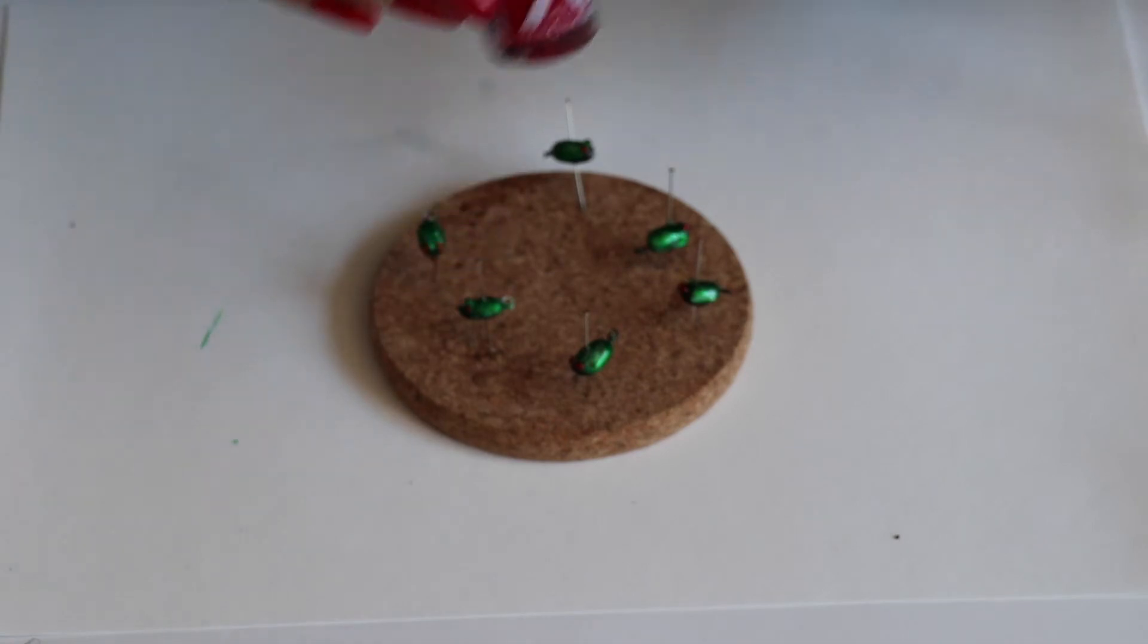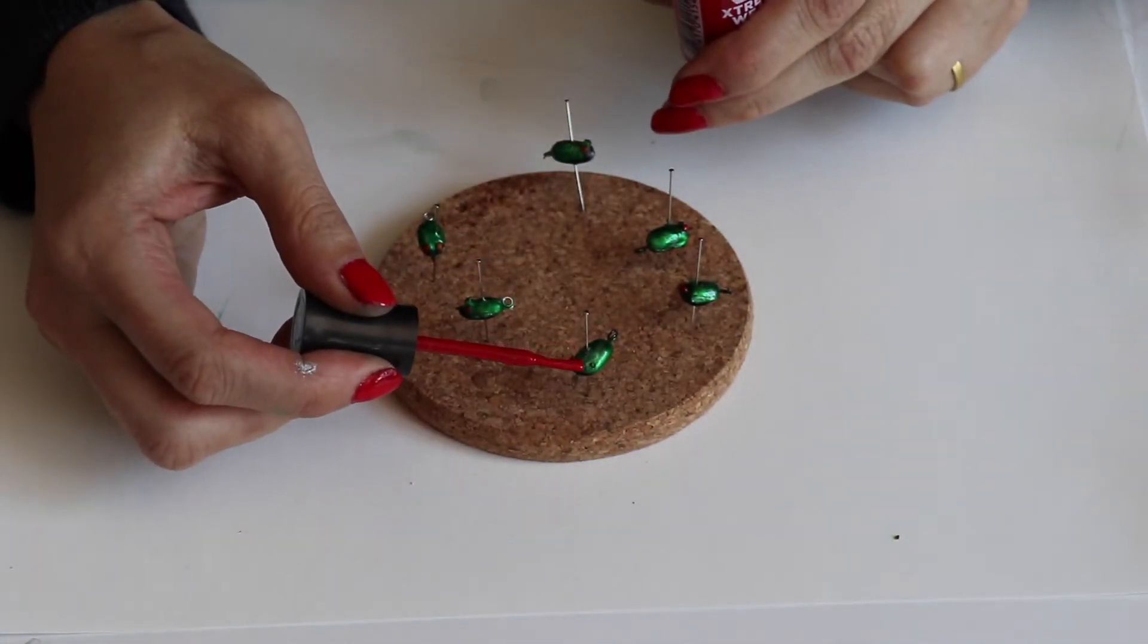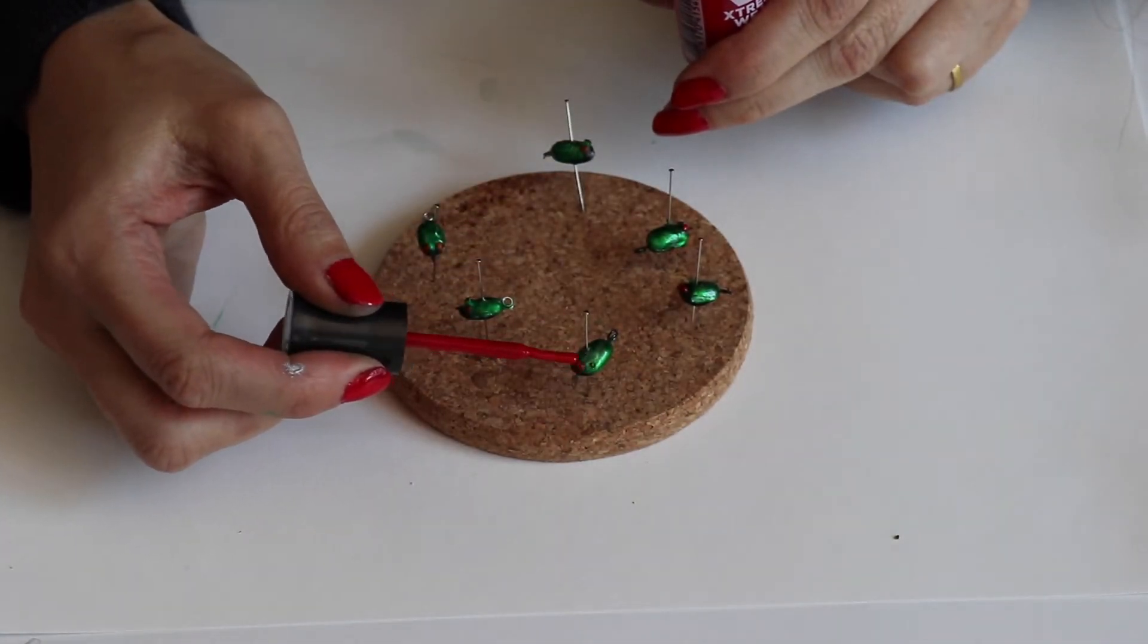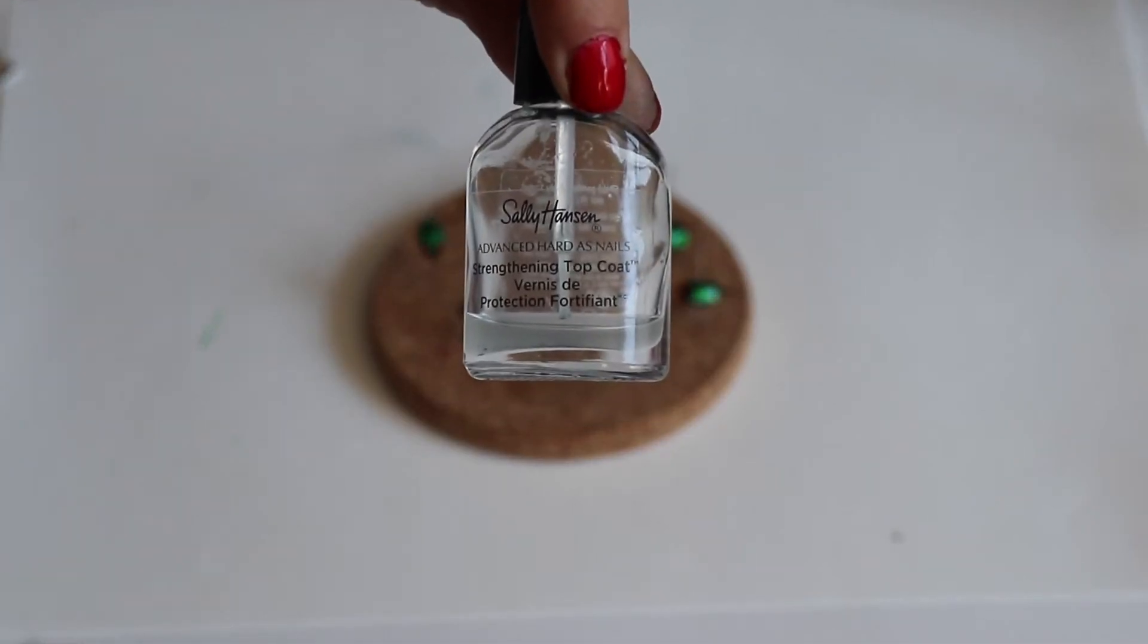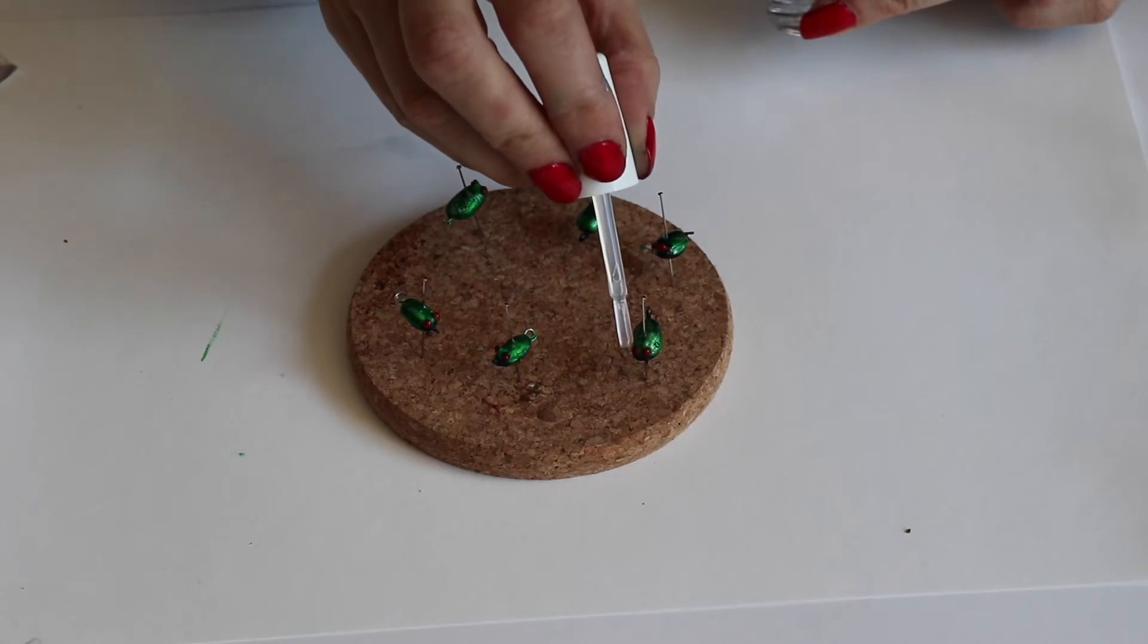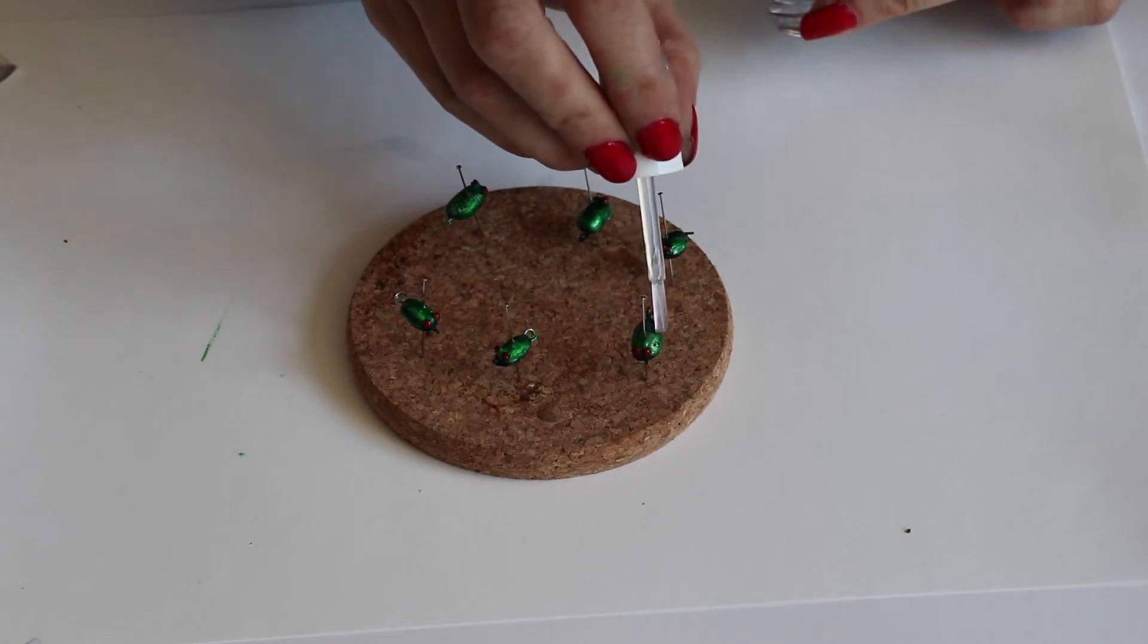Once the glue has dried, I use red nail polish to brighten the eye. Red acrylic paint would also work. A clear top coat of nail polish seals the bean and helps keep the eyes from falling off.